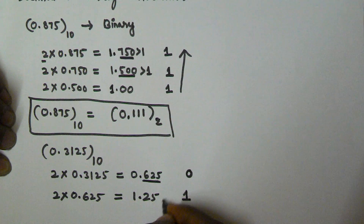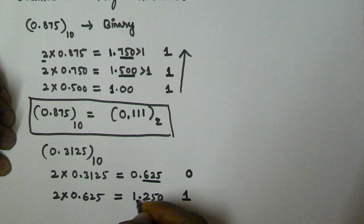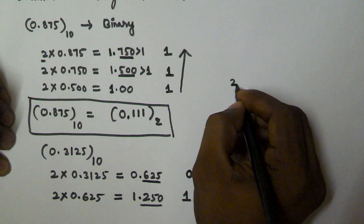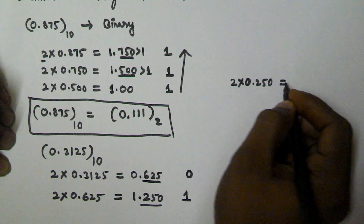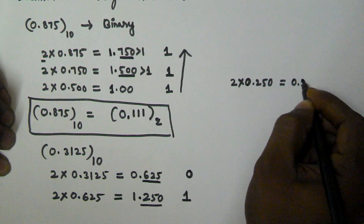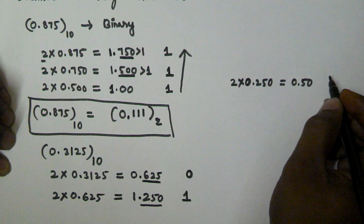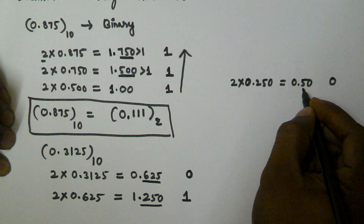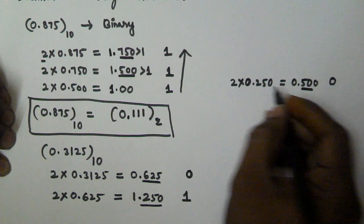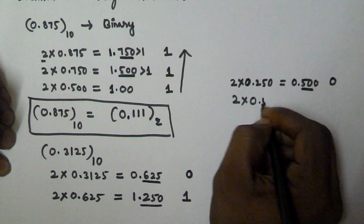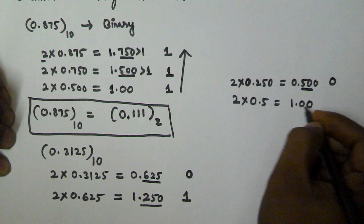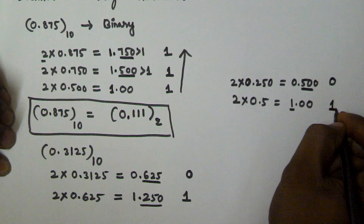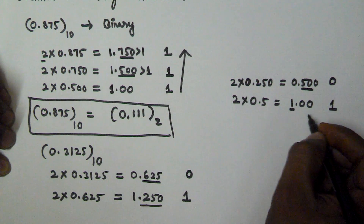The decimal part of 1.250 is 0.250. We multiply 0.250 by 2, which equals 0.500. This is less than 1, so we take 0. The decimal part is now 0.5. We multiply 0.5 by 2, which gives 1.00. We take 1 here and stop the procedure whenever we get the value 1.